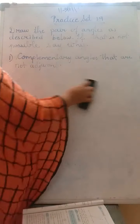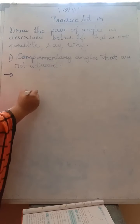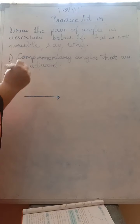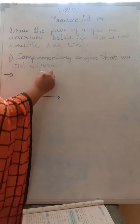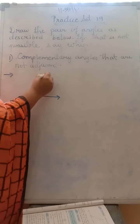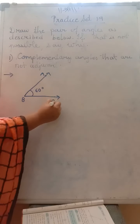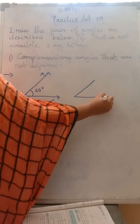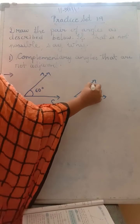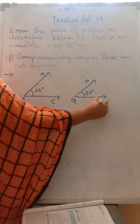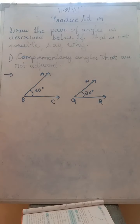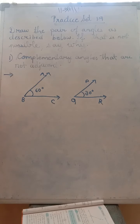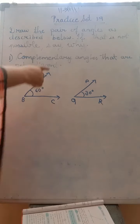So how will be your answer? You have to use a protractor. Draw any two angles whose addition will be 90 degrees. For example, I am taking 60 degrees — label it A, B, C. The other angle I am taking as 30 degrees — label it P, Q, R. You can also take 80 plus 10, 45 plus 45, 55 plus 35 — any two measurements whose addition is 90 degrees to make complementary angles. This is the answer for the first description.